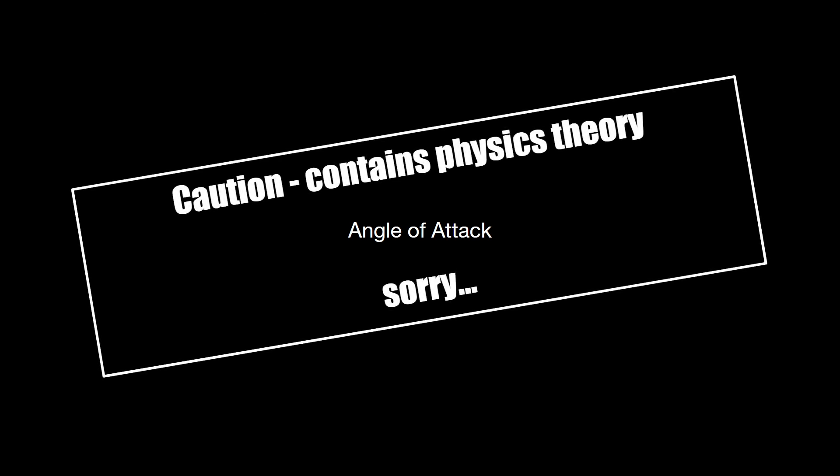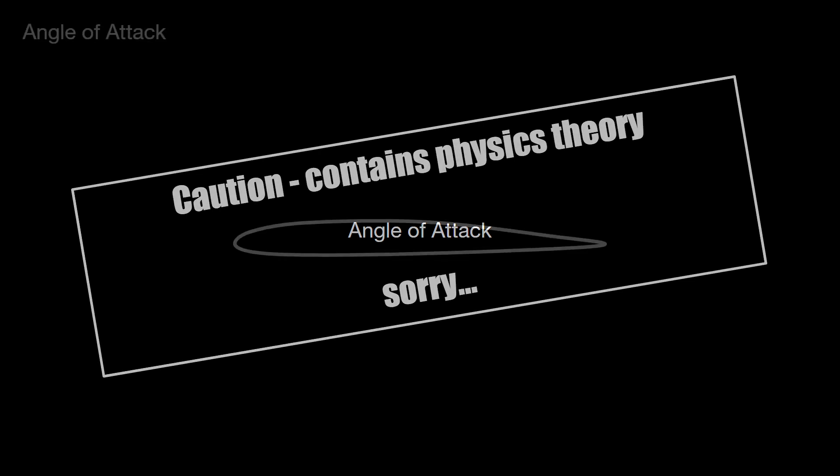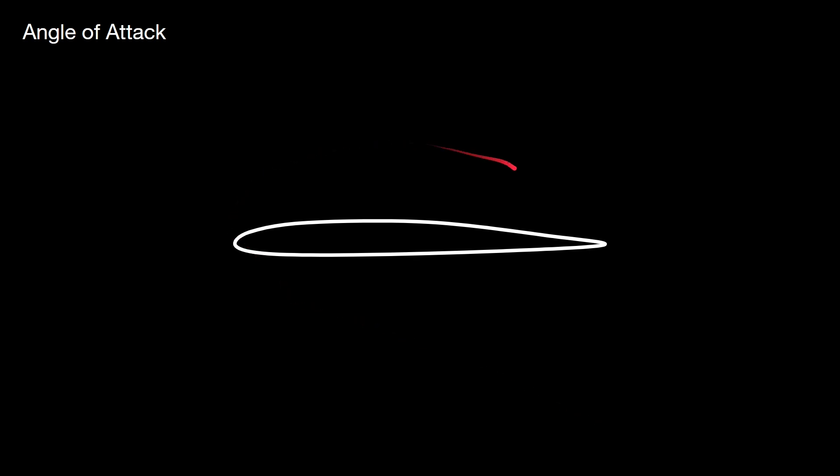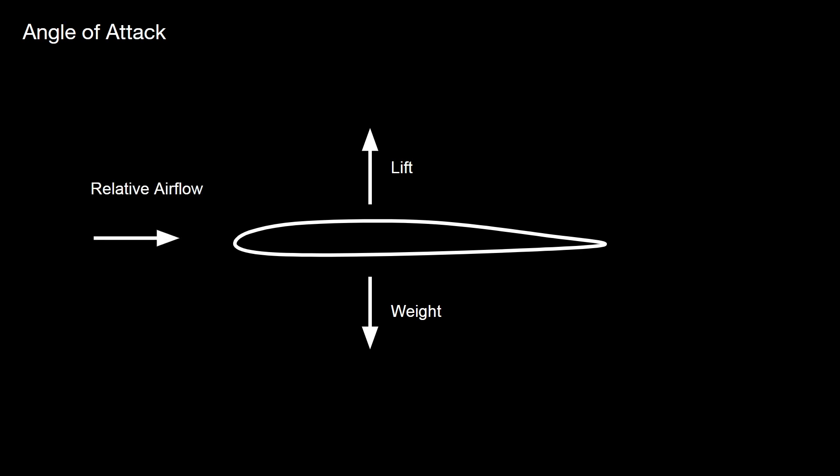In order to understand angle of attack we do need to consider a little bit of physics theory. I'm not an expert at physics - my grades at physics were very average to say the least - so we'll just muddle through and do the best we can. This is a representation of a wing or an aerofoil. We've got the leading edge, the trailing edge, the lower surface, the upper surface, and the cord line running through the middle. The wing produces lift which offsets the weight of the aircraft, and when lift and weight are balanced the aircraft is in level flight.